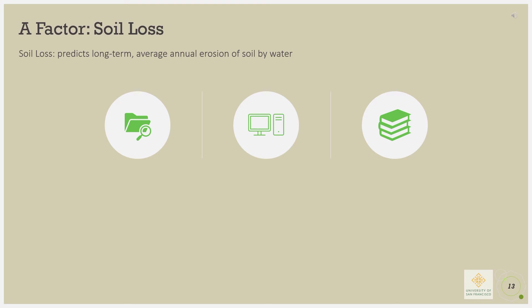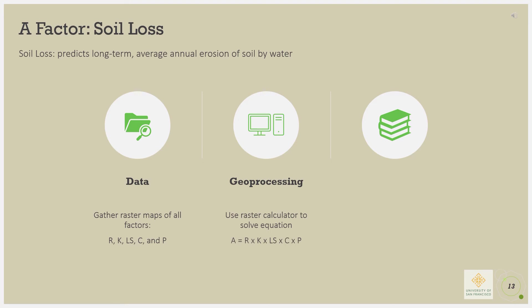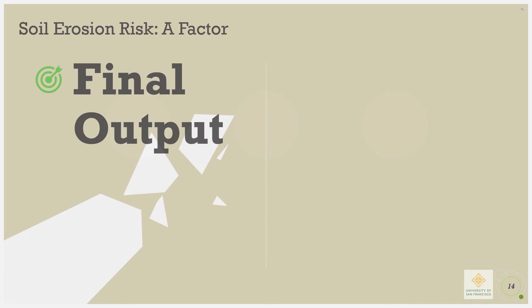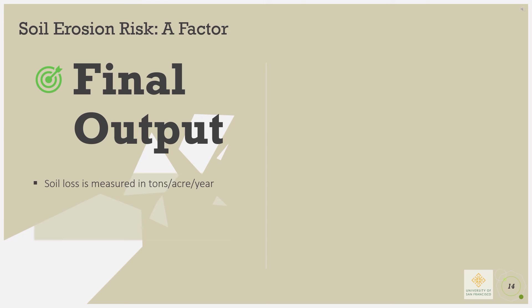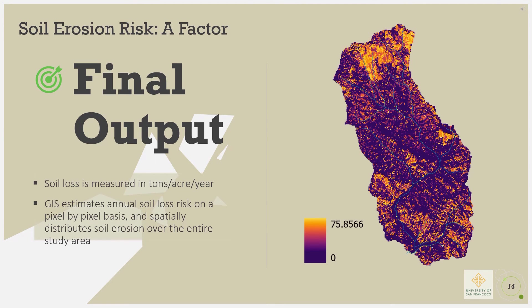The A factor, or soil loss, is the final outcome of the RUSLE model. Soil loss predicts the long-term average annual erosion of soil by water. In solving for A, we gathered all the raster maps from the R, K, LS, C, and P factors, and geoprocessing was completed using the raster calculator to solve the RUSLE equation: A equals R times K times LS times C times P. The final outcome is a raster map for soil loss, measured in tons per acre per year, spatially showing the soil erosion risk of the Redwood Creek watershed on a pixel-by-pixel basis. Regions with minimal soil erosion potential are represented in purple, and regions with greater soil erosion potential are represented in yellow to red.